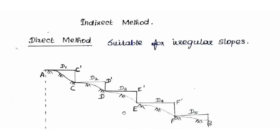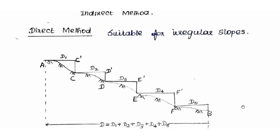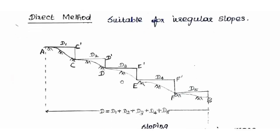The direct method is suitable for irregular slopes. In the diagram, A and B are the survey stations. We calculate the distance from A to B. A is the follower, positioned at the back end of the chain, and the leader will proceed forward.